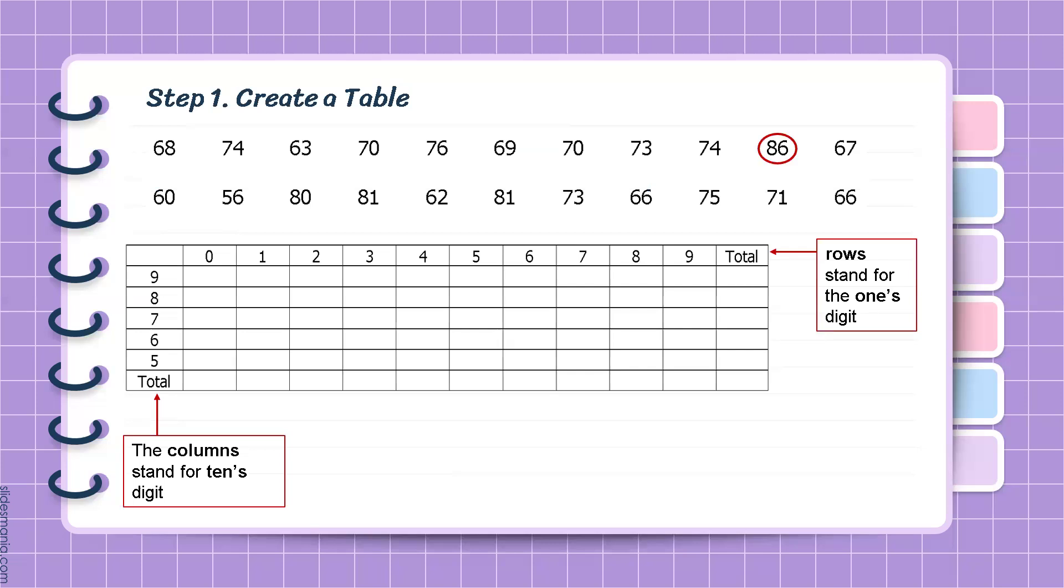And has 8 as its tens digit, while the lowest score is 56 and has 5 as its tens digit. The rows stand for the ones digit, that is, from 0 to 9.